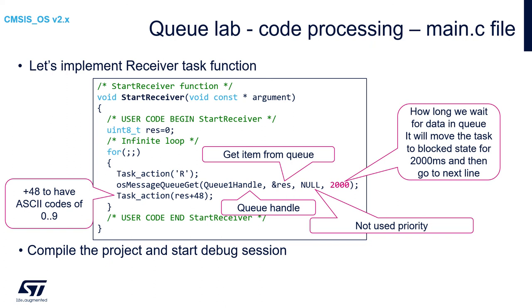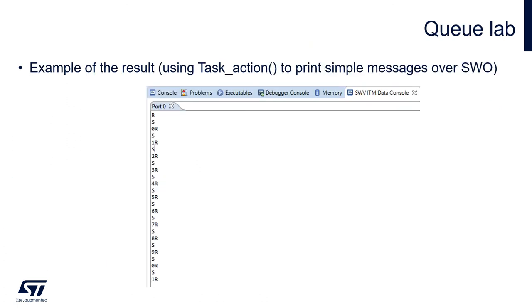Assuming we collected something from the queue, we call the task action function and transfer the collected data — a digit from 0 to 9. We add 48 to get the ASCII codes of digits 0 to 9, so we should see 0 to 9 on the ITM output. Then we can compile the project and start a debug session to see the final result.